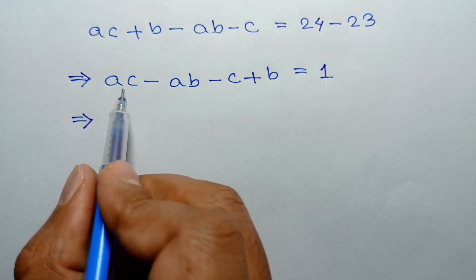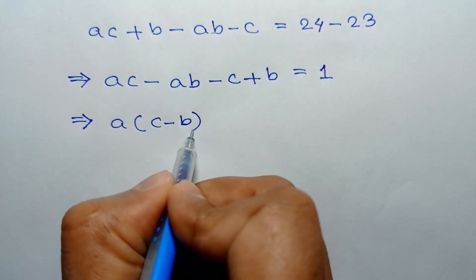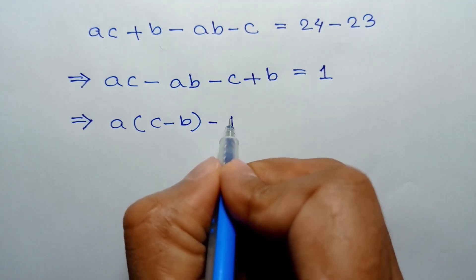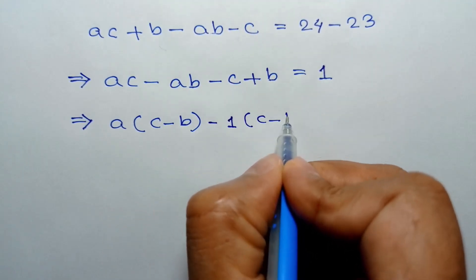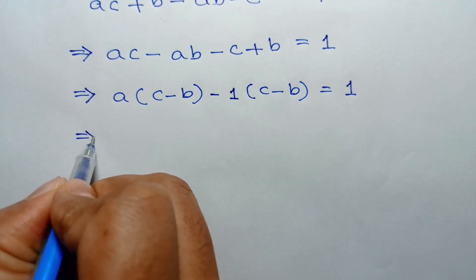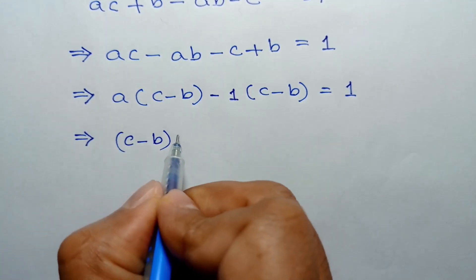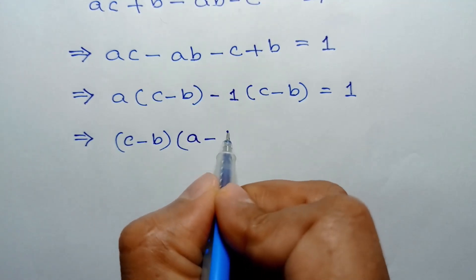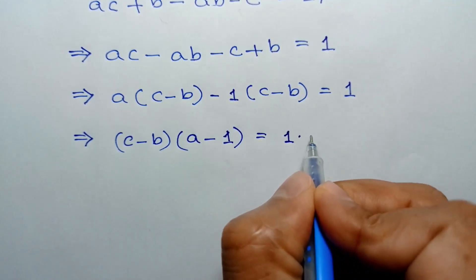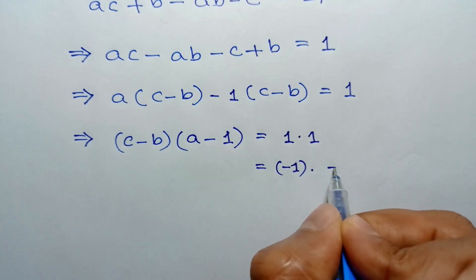Taking A common from the first two terms we get A times (C minus B), and taking negative 1 common from the last two terms we get negative 1 times (C minus B), so the equation becomes (C minus B) times (A minus 1) is equal to 1. Now 1 can be written as 1 times 1 or negative 1 times negative 1.